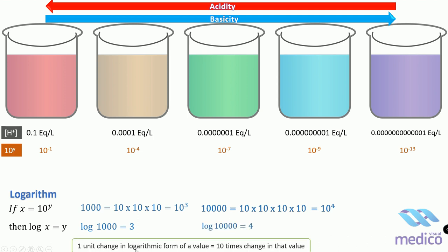The one unit change in logarithmic form of a value is 10 times change in that value. Now logarithmic form has changed from 3 to 4, but the value has increased from 1000 to 10,000, so the value has increased by 10 times. Another 10 is multiplied here.